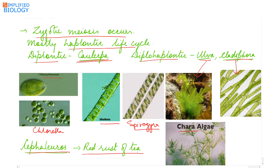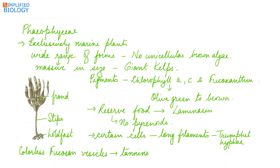Cephaleuros is a green alga that causes red rust of tea. Chlorella and Ulva are used as food, while Chlorella is used in spaceflights to provide oxygen. Even in sewage ponds, Chlorella and Chlamydomonas are used. Ulva is commonly referred to as sea lettuce.